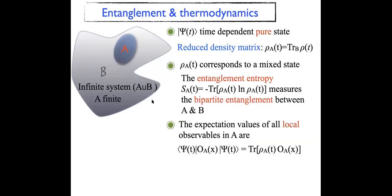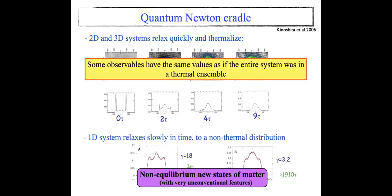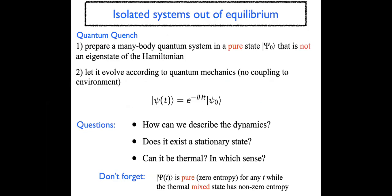To understand what is going on, we have to understand the connection between entanglement and thermodynamics. We take a system that we consider infinite, and in this infinite system we have a time-dependent pure state. We focus our attention on a finite subsystem that we call A; the remainder is called B.